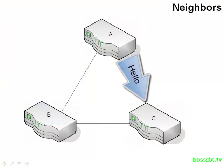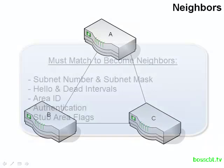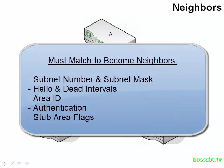The hello information has to match between two different routers in order for them to become neighbors. Just because you receive a hello packet doesn't mean you'll automatically become a neighbor. The subnet number and subnet mask of a particular router has to match the subnet and subnet mask of another router. So routers A, B, and C should all have the same subnet number and subnet mask.